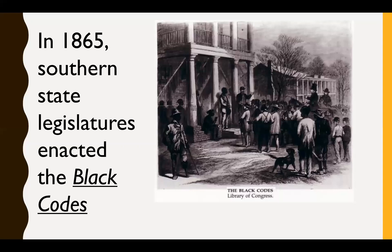Republicans in Congress started butting heads with the president on how to reconstruct the nation. Under Johnson there was Limited or Presidential Reconstruction, but around 1866 the Republicans took over reconstruction — trying to implement their own ideas — in what became called Radical Reconstruction. They were definitely not going to be as lenient as Johnson. They wanted to punish the South, which they held responsible for hundreds of thousands of deaths, and make sure the South could never turn against the United States again.